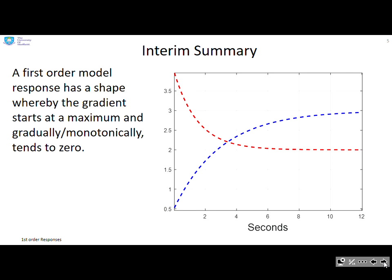So here's the interim summary. The first order model response has a shape whereby the gradient starts at a maximum. So here you can see it starts at a maximum gradient and then gradually the gradient gets less and less. And you can see with the red curve, we're saying, well, you can also do the same thing. We've got the steepest here and gradually the gradient goes to zero.